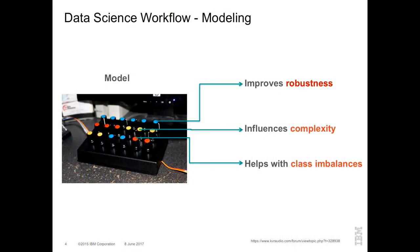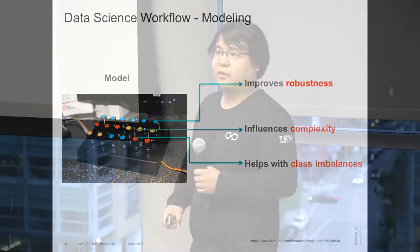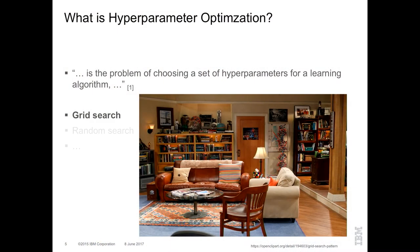You can imagine those models as boxes where they have on the surface different knobs, and different knobs may, if you tune them the right way, improve the robustness of the model, or they could influence the complexity or help with class imbalancing. In terms of hyperparameter optimization, what is that kind of problem? It's the problem of choosing a set of parameters for a learning algorithm with respect to a certain quality measure where you set how good the model is. There are different approaches like grid search, random search, or Bayesian optimization, but for the sake of this short talk, I will concentrate on grid search today.